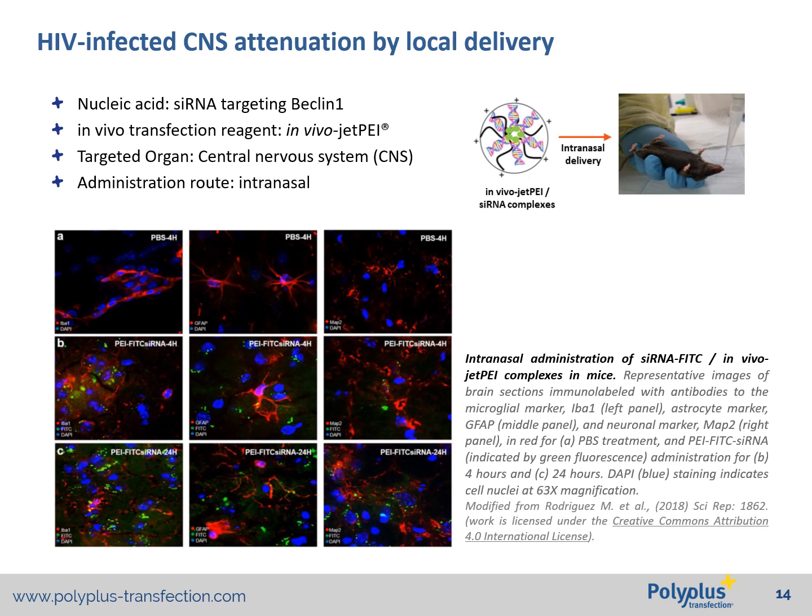The efficiency of intranasal sRNA delivery was assessed in the normal mouse brain by triple fluorescence imaging with FITC-labeled sRNA, cell-type-specific labeling, and DAPI staining. Here are images of brain sections for each tested condition. For PBS only injected, no FITC-labeled sRNA can be detected. With in vivo-jetPEI FITC-labeled sRNA, a green signal can be detected already at 4 hours and further increased at 24 hours post-transfection.